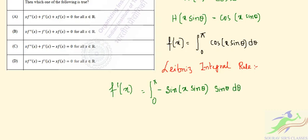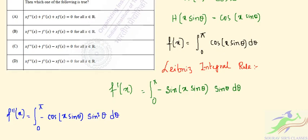We can also find the second derivative f''(x). So f''(x) = integral from 0 to π of minus cos(x sin θ) · sin²θ dθ.